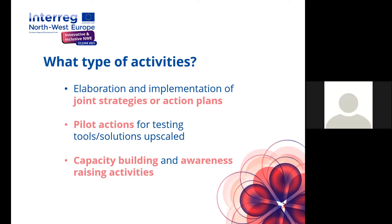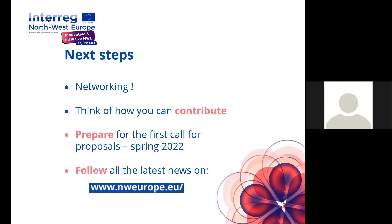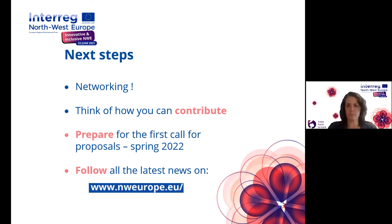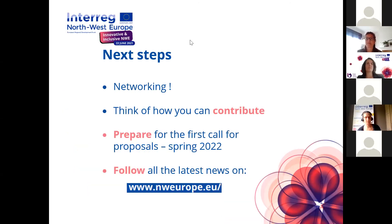Future cooperation projects shall be implemented through at least one of the following categories: elaboration and implementation of joint strategies or action plans; pilot actions for testing tools and solutions; upscaling; and capacity building and awareness raising activities. You can choose one or combine them in one project. Given the variety of themes and activity types available, you can fit into all these different priorities. The next steps are to start networking — very soon in the breakout sessions — think about how to contribute with your ideas and expertise, and prepare for the first call for proposals, which could be launched around spring next year.